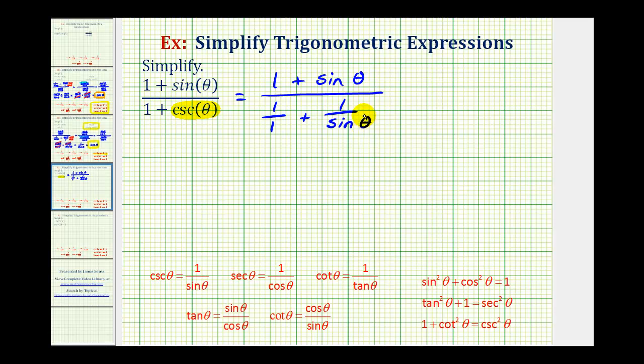At least in this form, I know that we can add these two fractions to try to simplify this expression, but of course to add these, we do have to have a common denominator, which would be sine theta, so I have to multiply one over one by sine theta over sine theta.